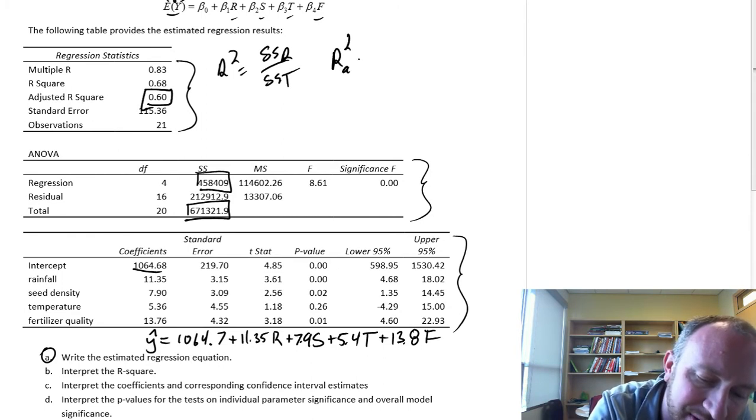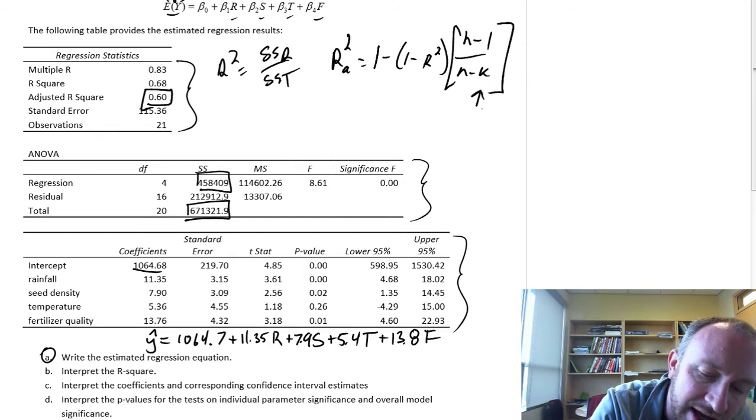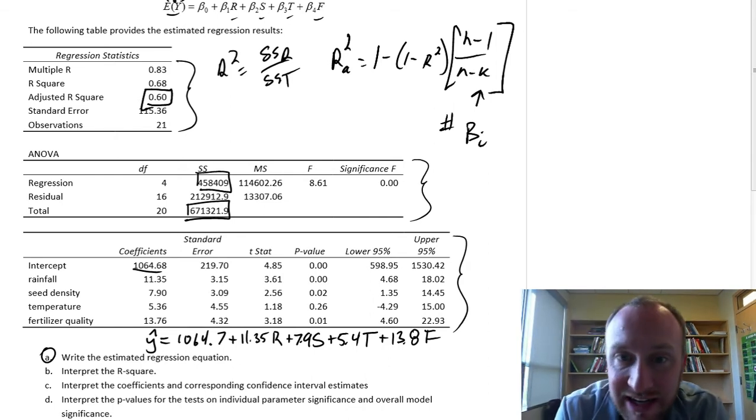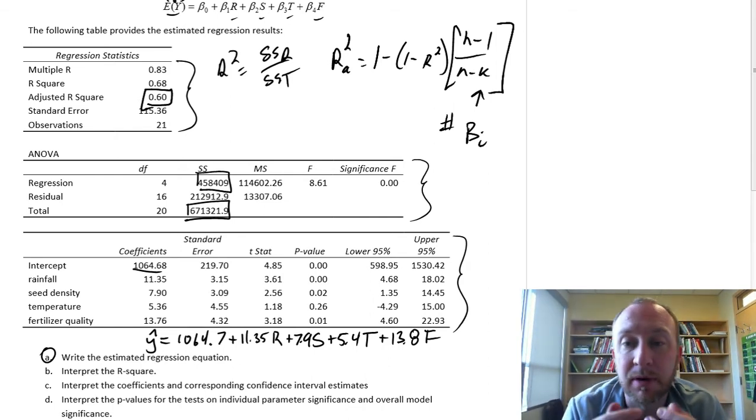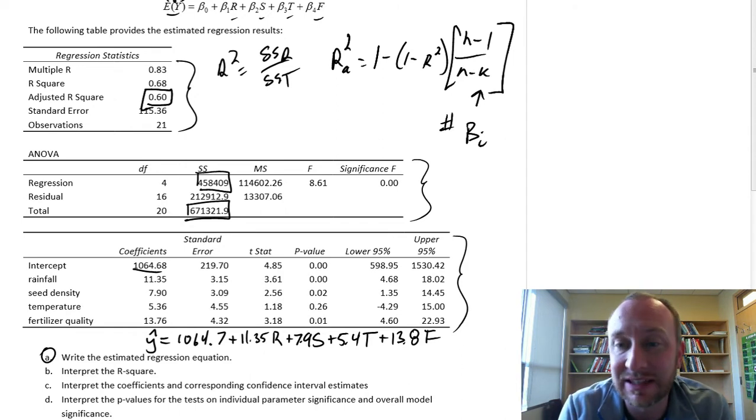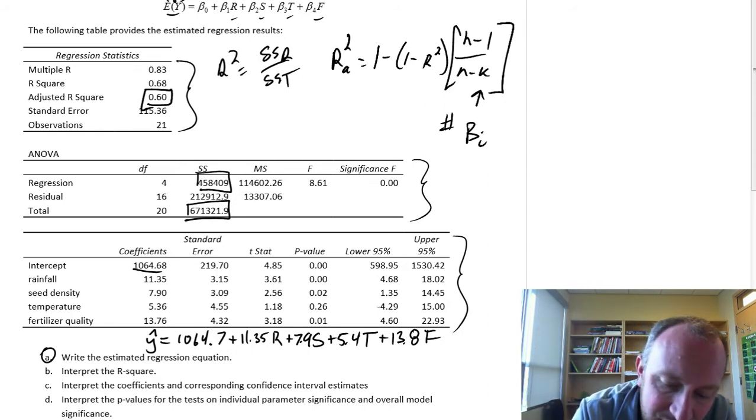So let's look at the adjusted r squared, because the adjusted r squared provides a bit of a penalty, that's 1 minus (1 minus r squared) times (n minus 1) over (n minus k), where k is the number of coefficients that we're estimating.